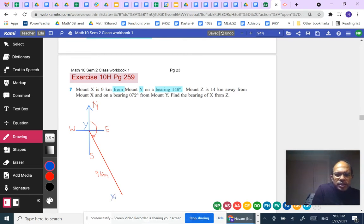The next piece of information says that Mount Z is 14 kilometers away from X and on a bearing 072 from Mount Y. Once again, the reference point is mentioned as Mount Y.